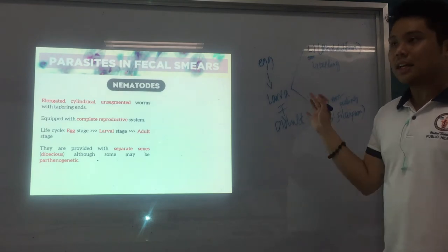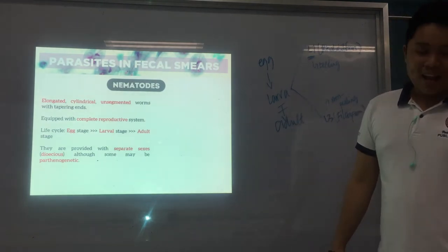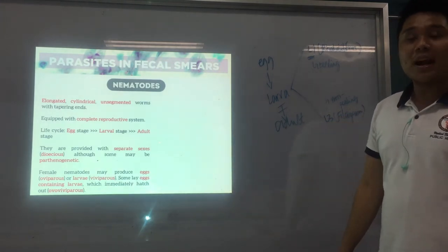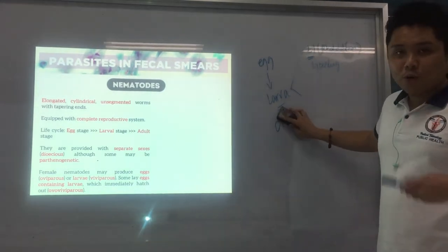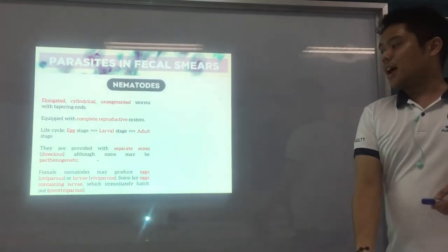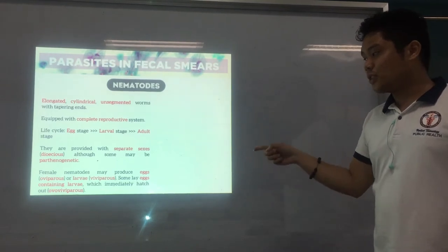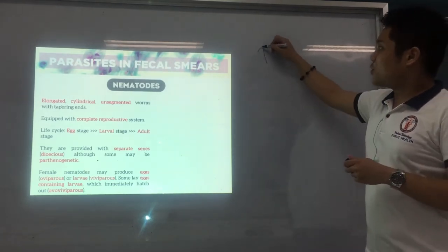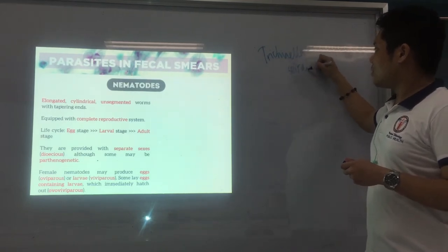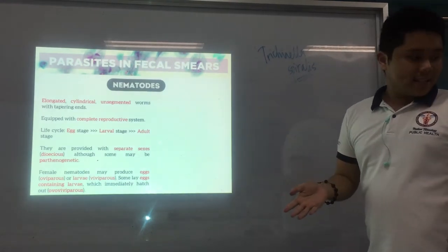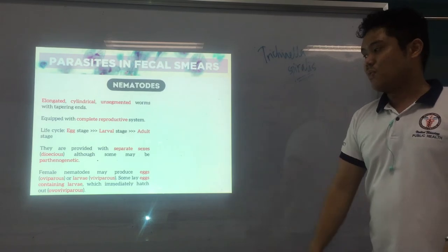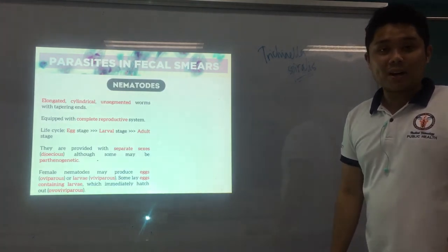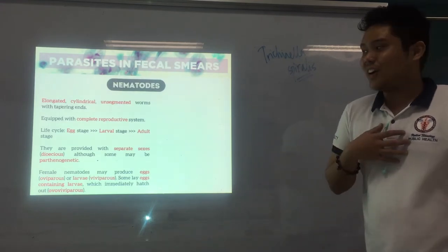But some may be parthenogenetic — we'll discuss that later. Female nematodes can lay eggs; if they only lay eggs, they are known as oviparous. Some may lay eggs containing the larva already — that's ovoviviparous. And some, like Trichinella spiralis, found in your muscles, don't lay eggs at all — they lay the larva immediately — and are known as viviparous.